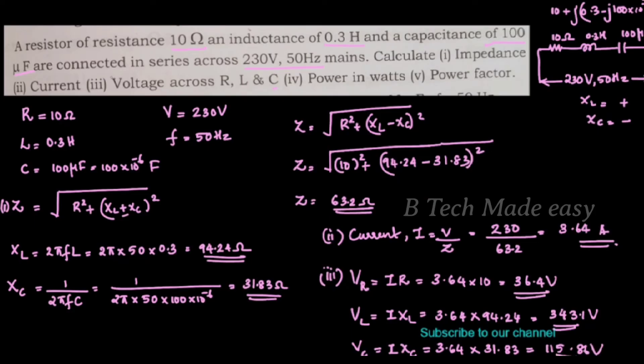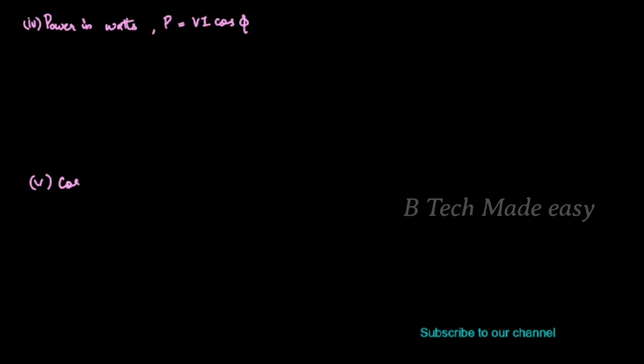We have impedance, current, voltage across R, L and C in the series circuit. Now we find power and power factor. P is equal to V I cos phi. Power factor is cos phi equal to R by Z, which is 10 divided by 63.2.